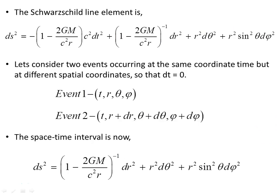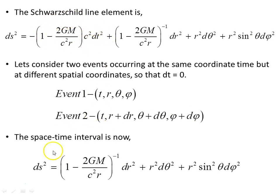The Schwarzschild line element is given by this object here. Let's consider two events occurring at the same coordinate time but at different spatial coordinates, so that dt is zero. Event one has coordinates t, r, theta, and phi, and event two has t, r plus dr, theta plus dθ, phi plus dφ. So they're occurring at the same time; otherwise the spatial coordinates are different. The spacetime interval, with dt being zero, that first term drops out, and we're left with just this spacetime interval here.